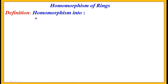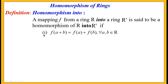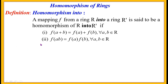Homomorphism of Rings. We define what is homomorphism into. A mapping f from a ring R into a ring R' is said to be a homomorphism of R into R' if: condition one, f(a + b) = f(a) + f(b) for all a, b belonging to R; and condition two, f(a · b) = f(a) · f(b) for all a, b belonging to R.